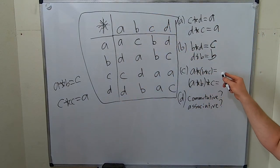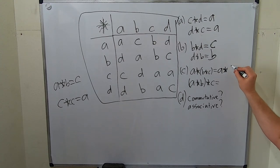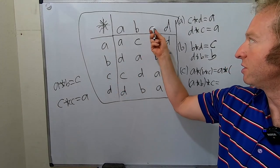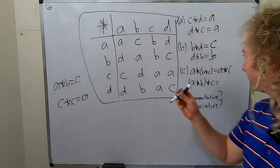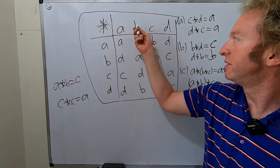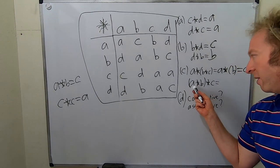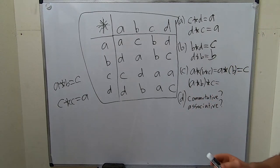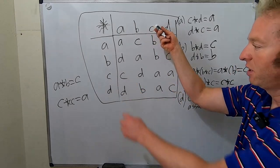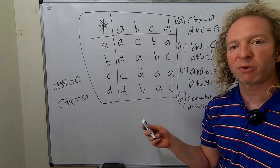Now we want to know what a star (b star c) equals. You do what's in the parentheses first. We compute b star c: go to row b, column c, and that gives b. So we get a star b, which we already found equals c. For the other grouping, (a star b) star c: a star b is c, and then c star c equals a. So a star (b star c) equals c, but (a star b) star c equals a.